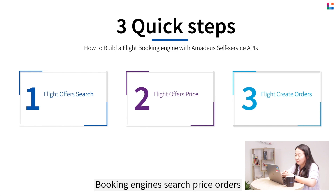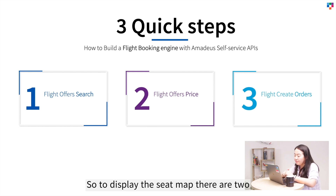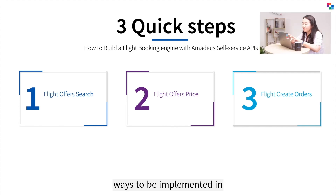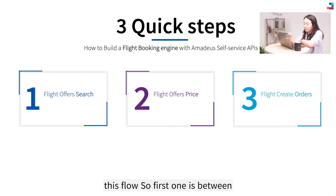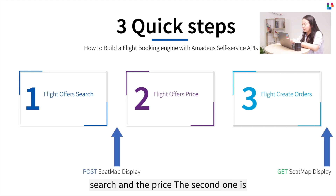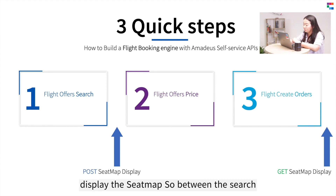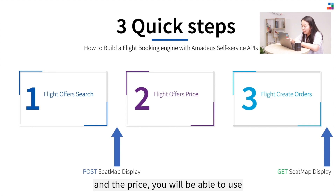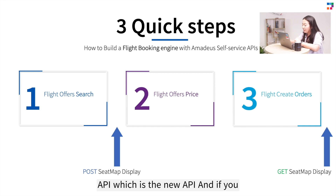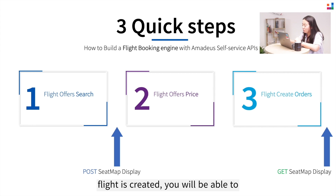Remember the three quick steps for flight booking engines: search, price, and orders. To display the seat map, there are two ways to implement it in this flow. The first is between search and price, and the second is after your flight order is created. Between search and price, you use the POST method of the Seat Map Display API, which is the newer API.